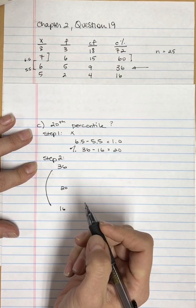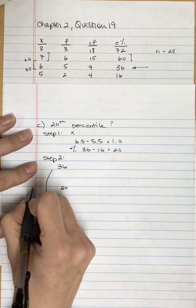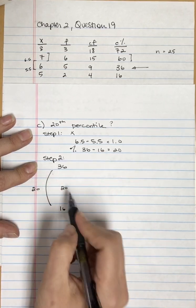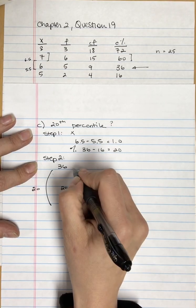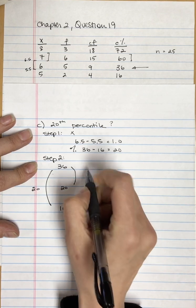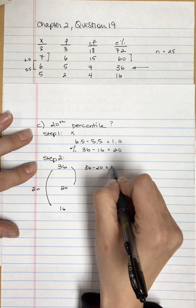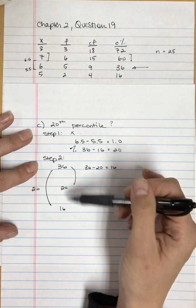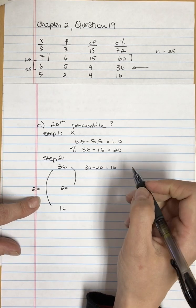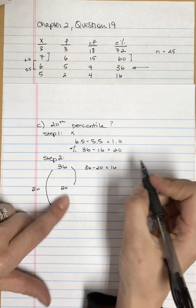Overall, it is 20 units. That happens to be the same, but it's coincidental. Here, we have 36 minus 20 equals 16. We have to go down 16 out of 20 steps to get to this location.